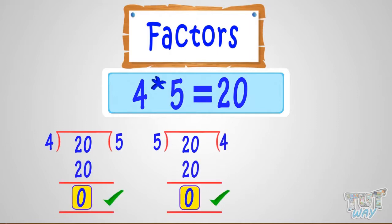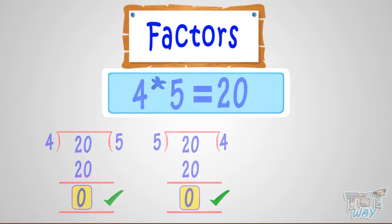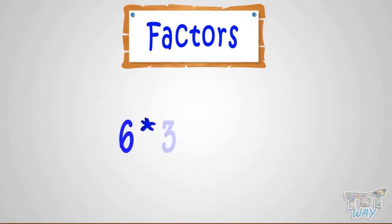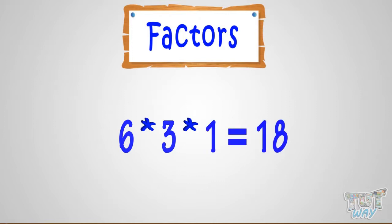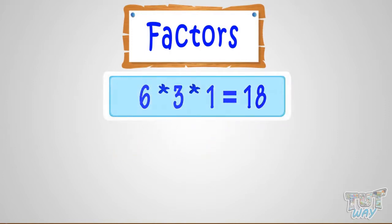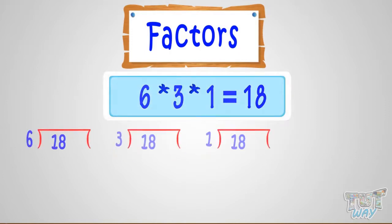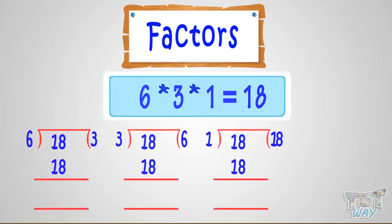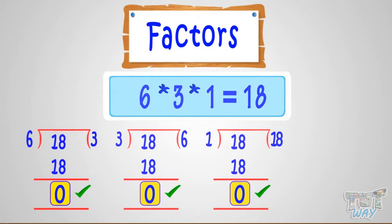6 multiplied by 3 multiplied by 1 equals 18. So here, 6, 3, and 1 are factors of 18. Or, 6, 3, and 1 can completely divide 18 — no remainder will be left.